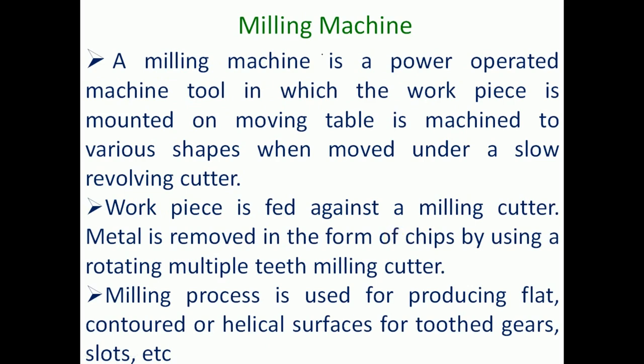A milling machine is a power-operated machine tool in which the work piece is mounted on a moving table and is machined to various shapes when moved under a slowly revolving cutter. The work piece is fed against the milling cutter and metal is removed in the form of chips by using a rotating multiple-teeth milling cutter — that means a multipoint cutting tool. Milling is used for producing flat, contoured, and helical surfaces for toothed gears, slots, etc.